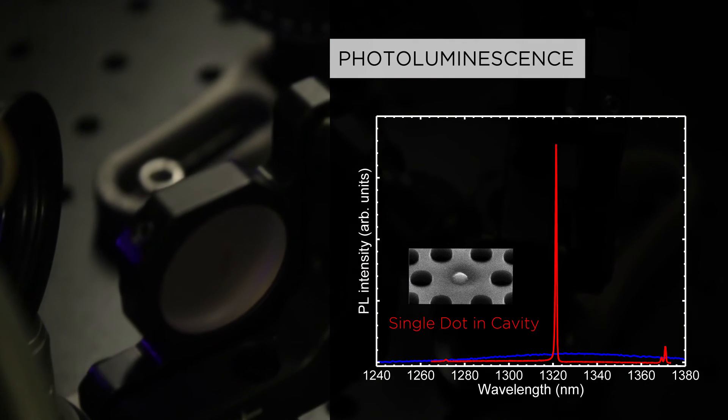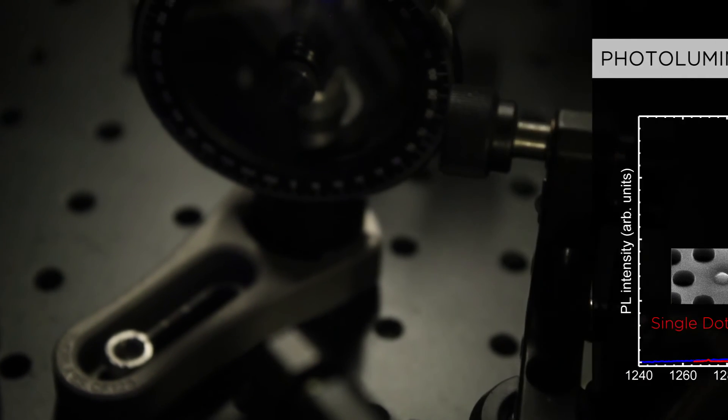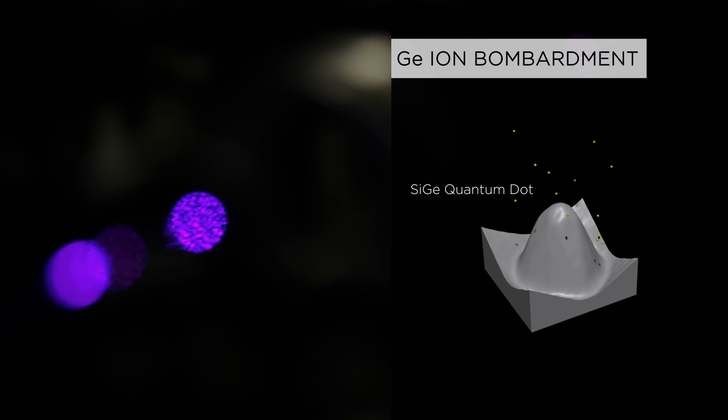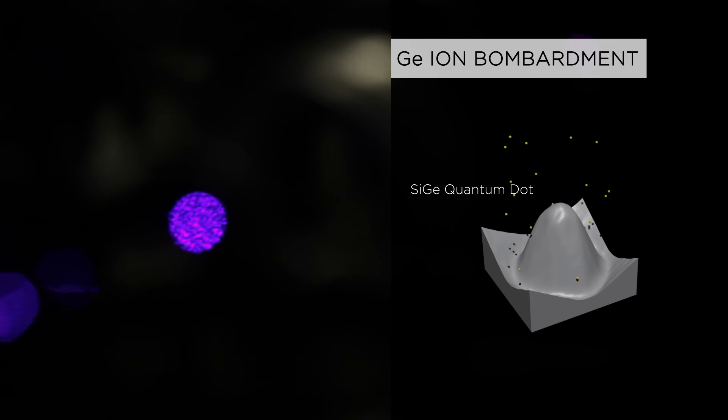The first results of embedded silicon-germanium quantum dots and photonic crystal cavities are indeed very impressive. There are, however, still challenges ahead. For example, room temperature emission is still too weak for many applications. We solve this problem by ion bombardment of the quantum dots during growth, which results in greatly improved light emission properties.